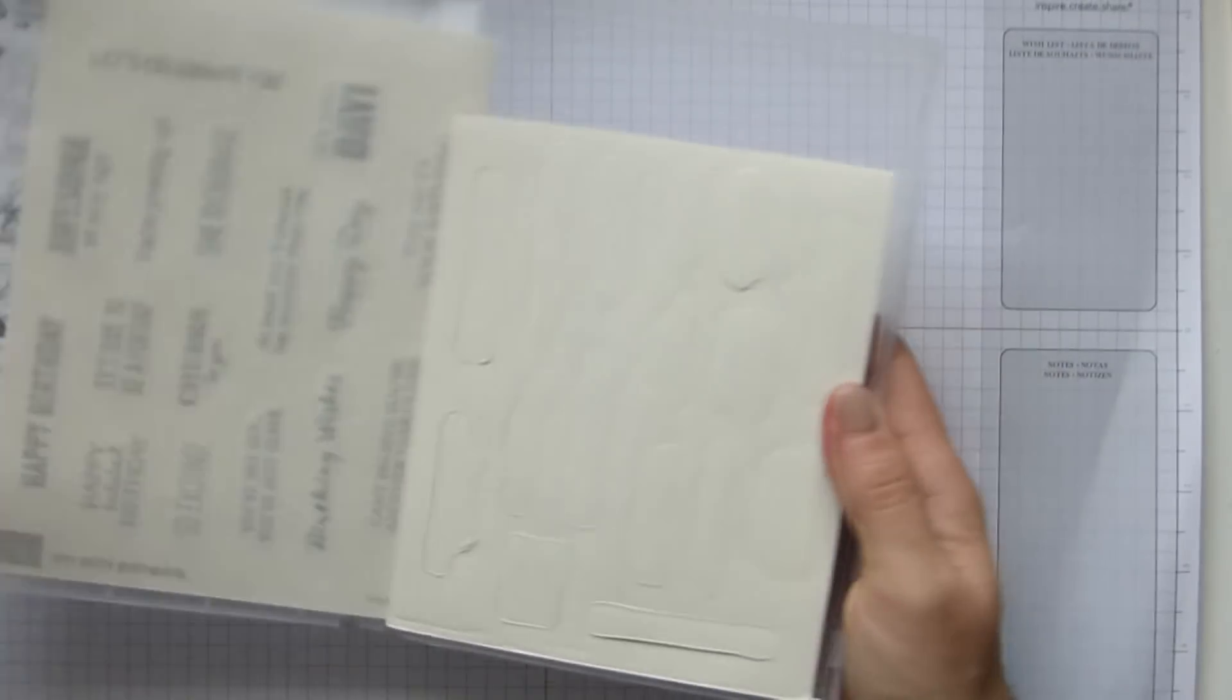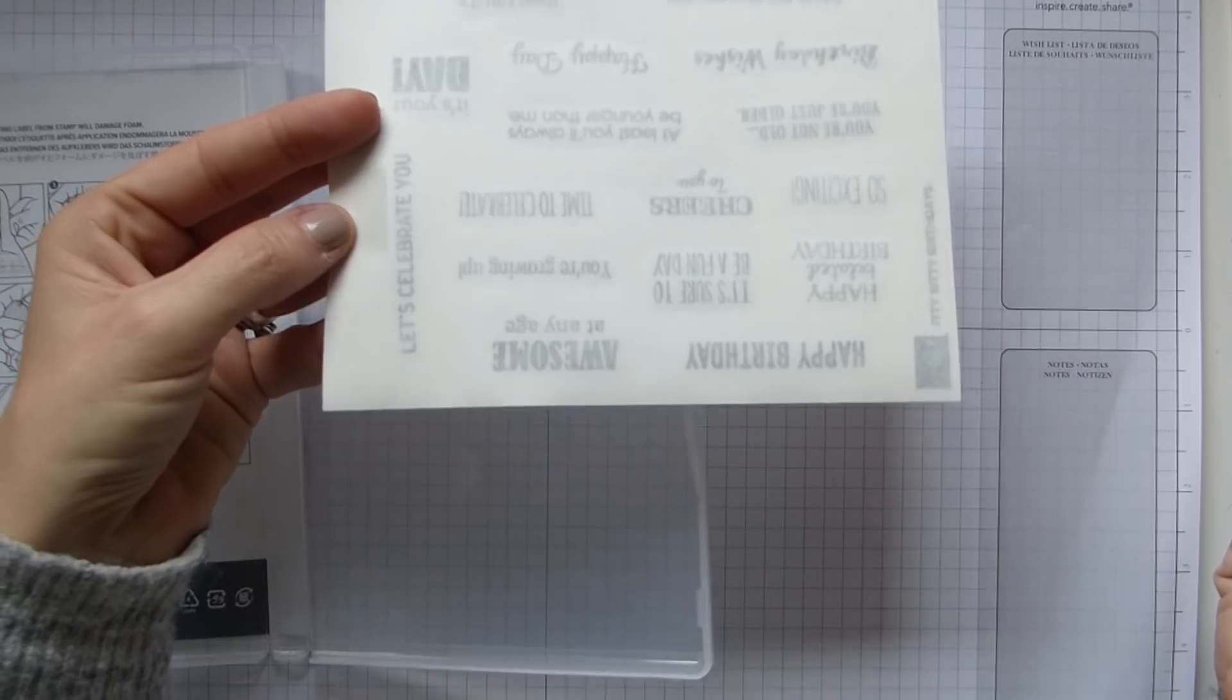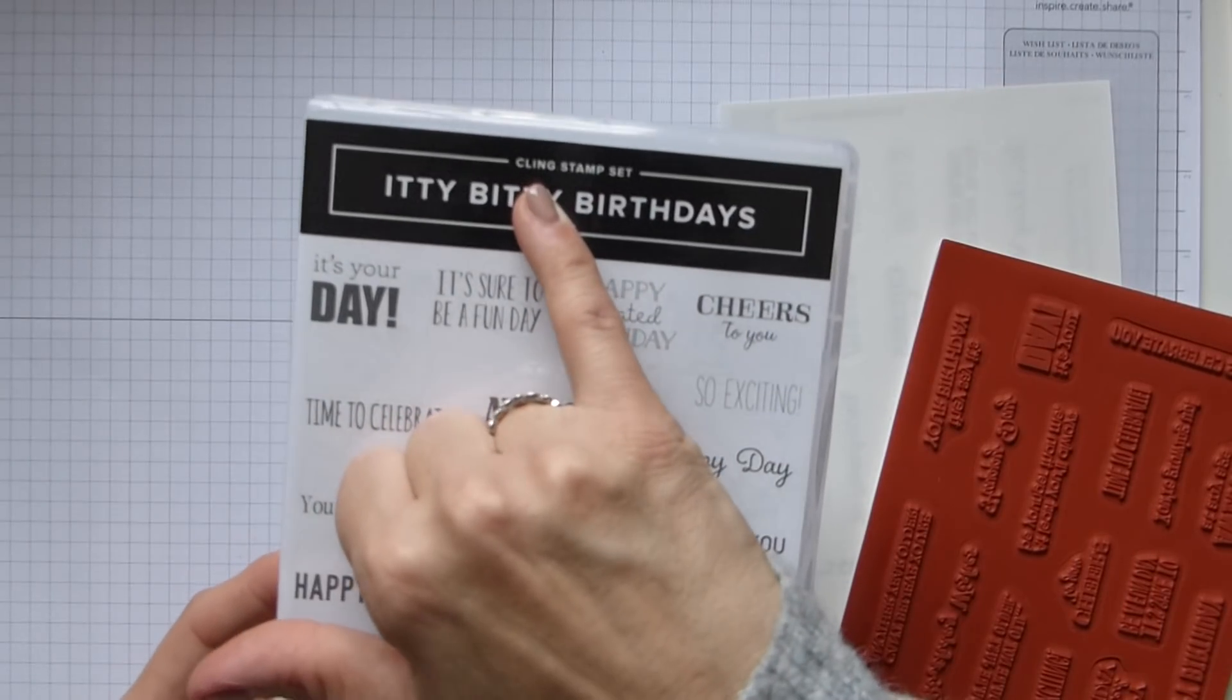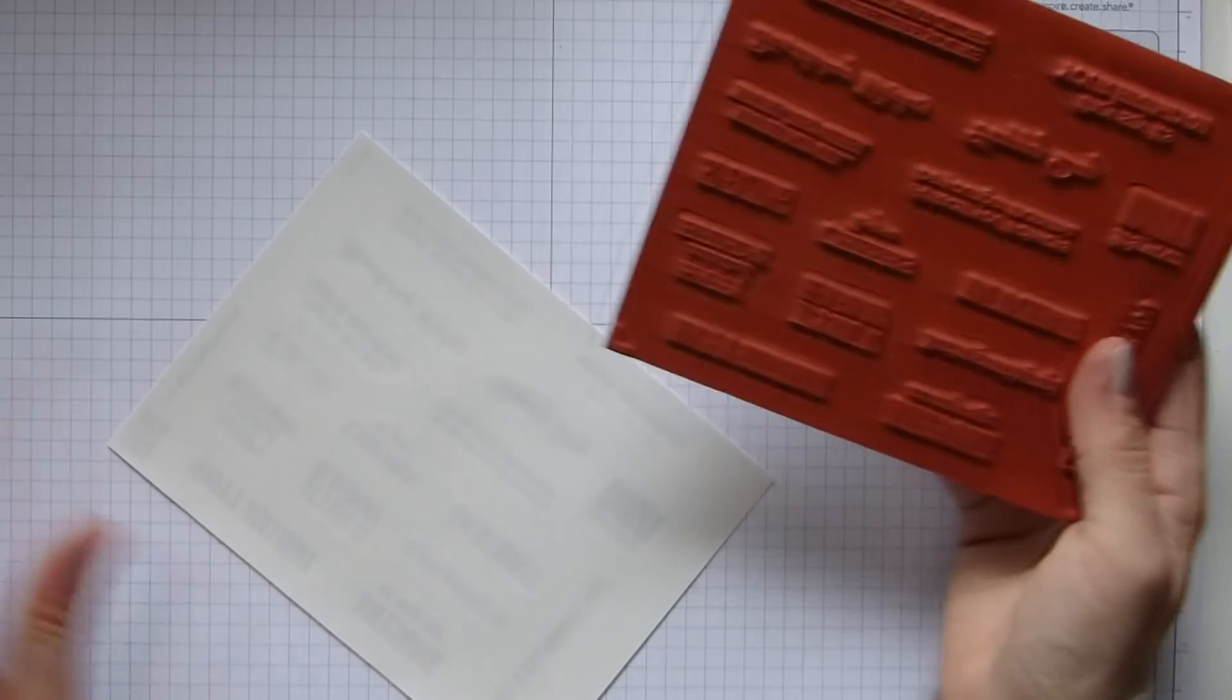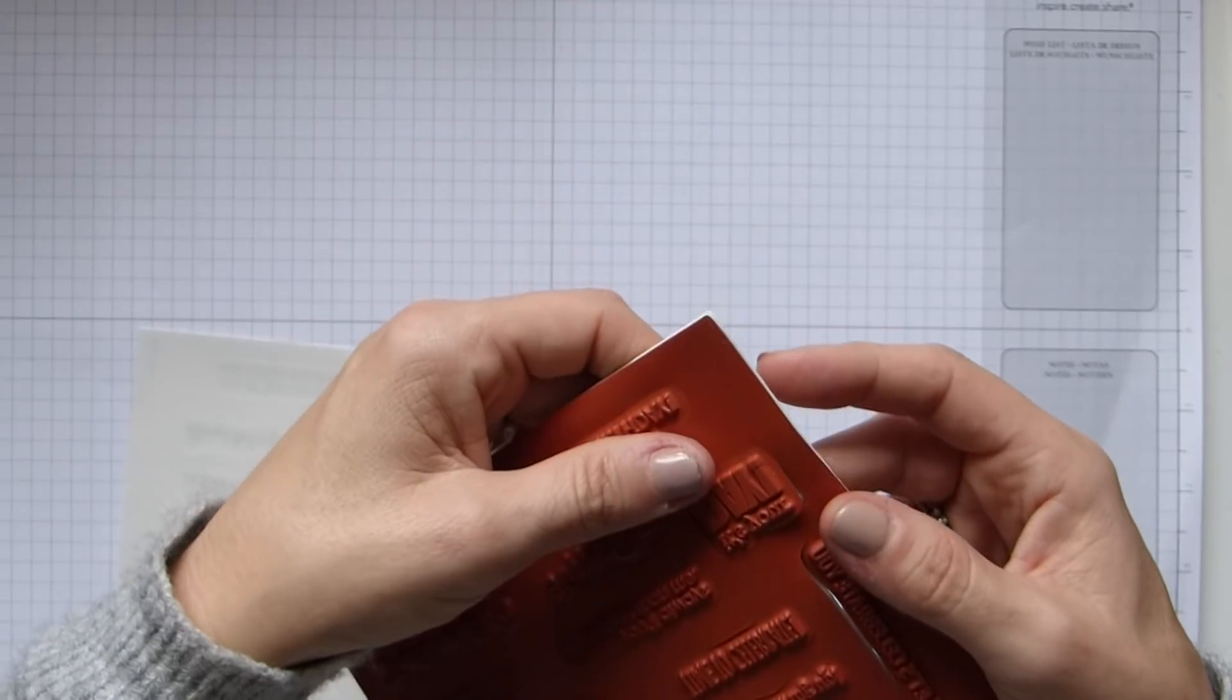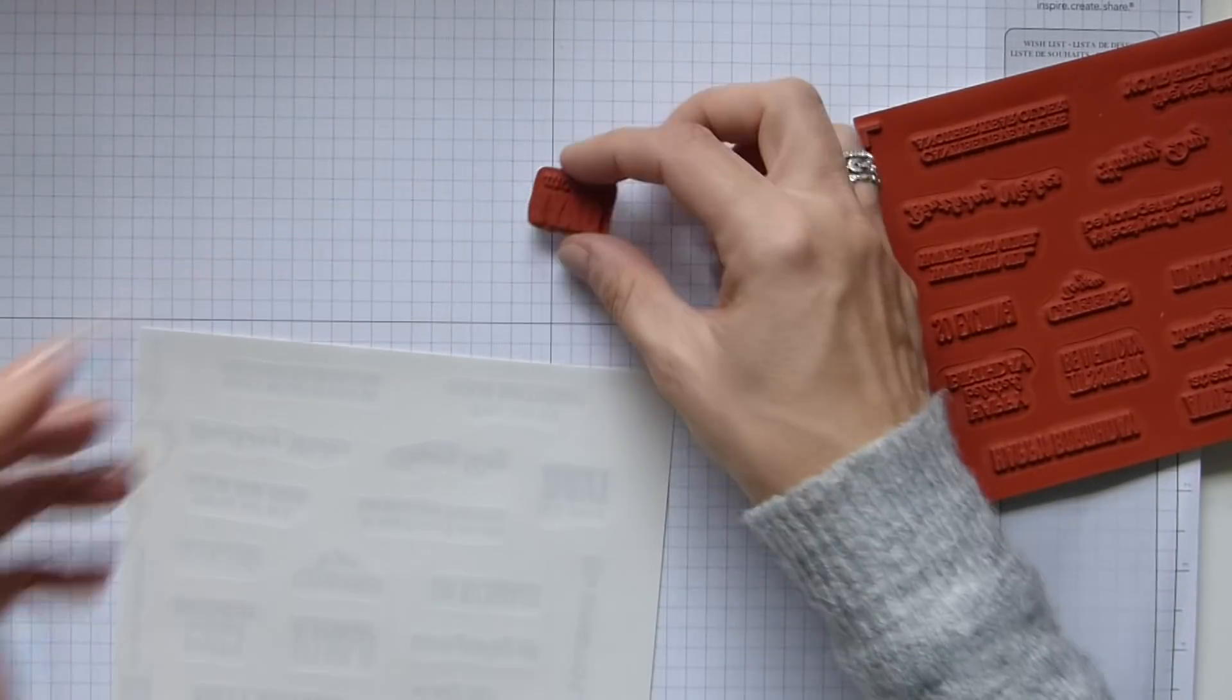They come exactly the same as the previous one. We have our stickers here and then our lovely red rubber. But obviously they do say now at the top cling stamp. So I'm just going to show you very briefly the difference with these.